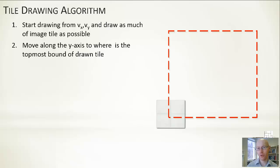When we're drawing it out, we could draw it row by row or column by column. In this case, we're going to do it column by column. If we're doing columns, we want to step up the Y coordinate and repeat that process. We're going to move along the Y axis to where the topmost bound, the bit that we drew up to, we're going to move up there and repeat the process of drawing it out.